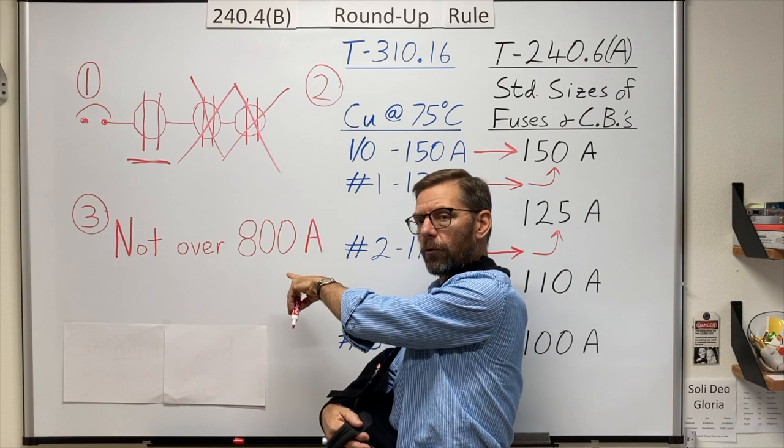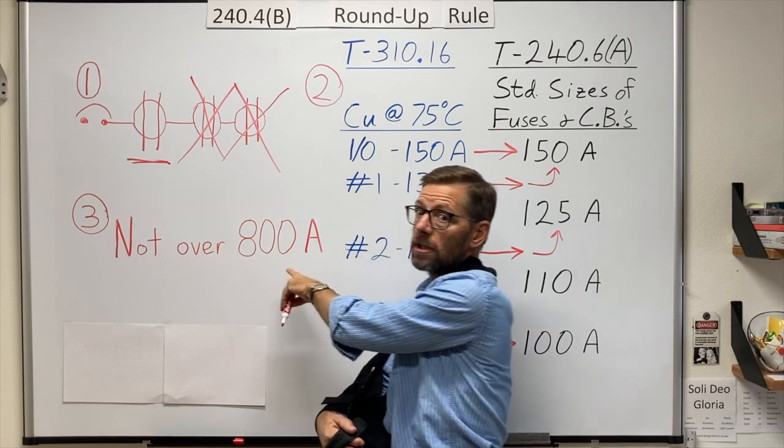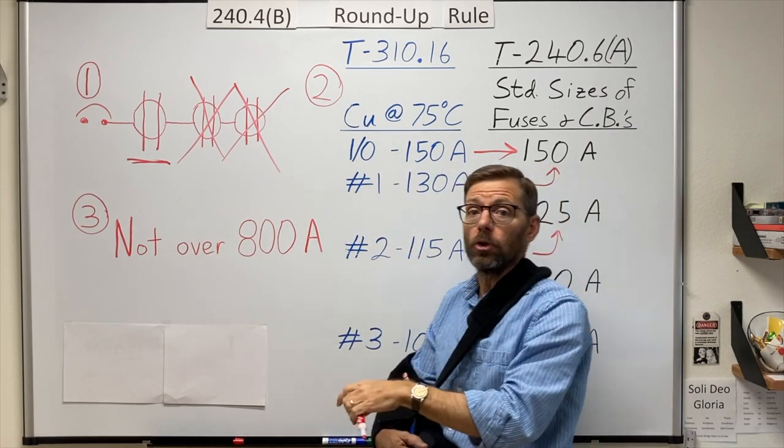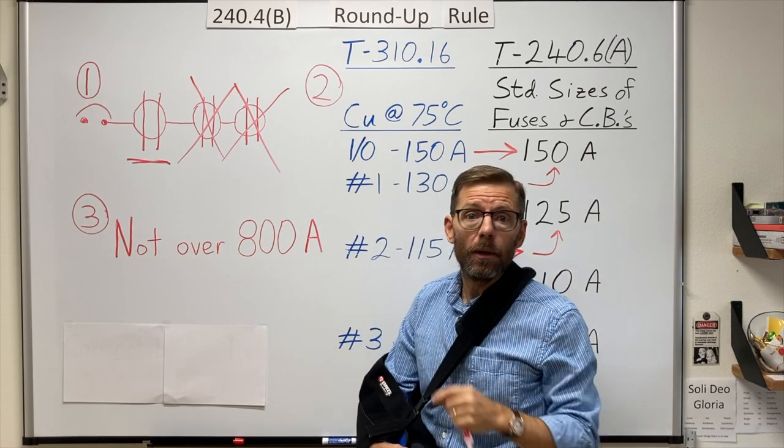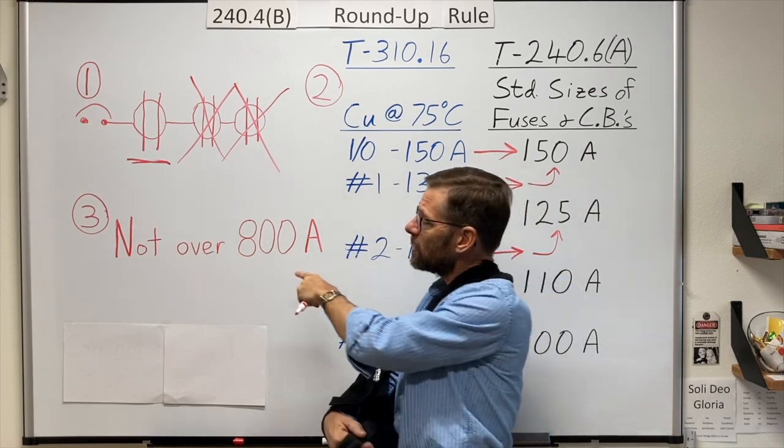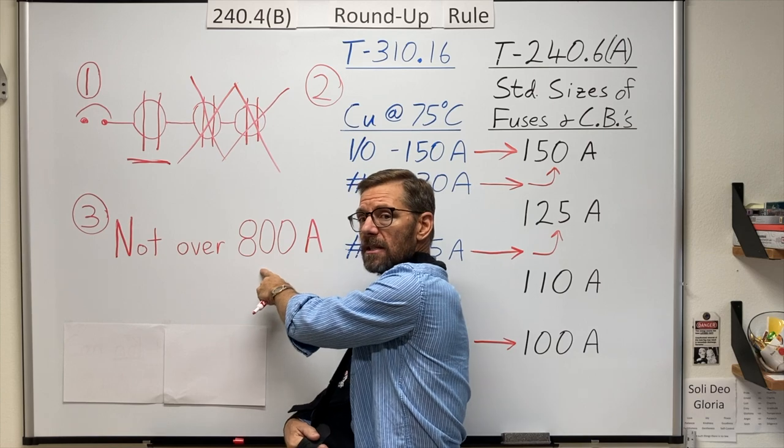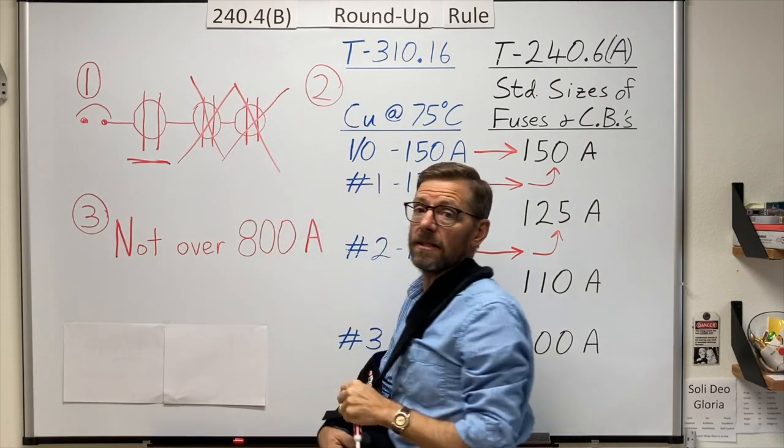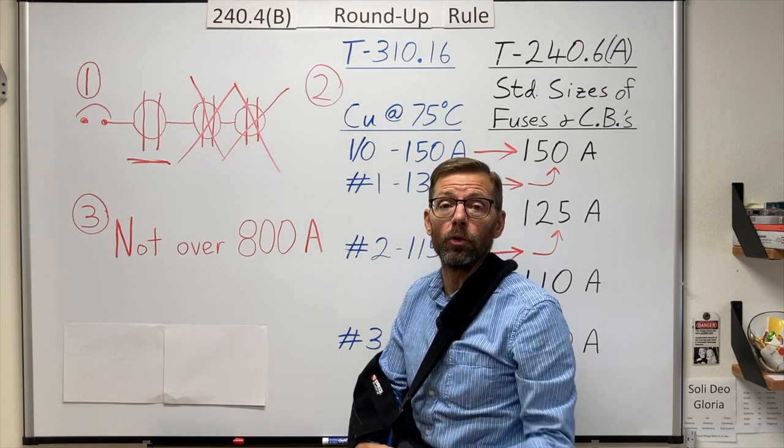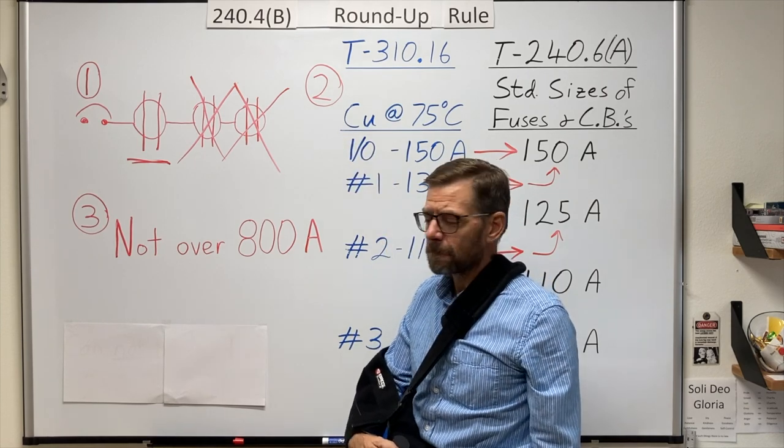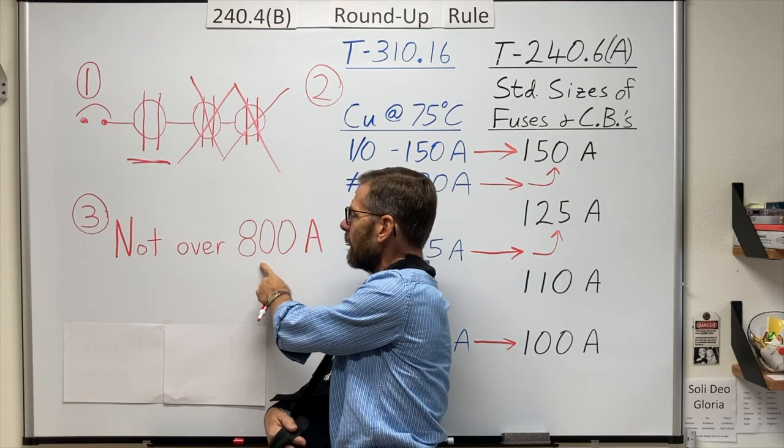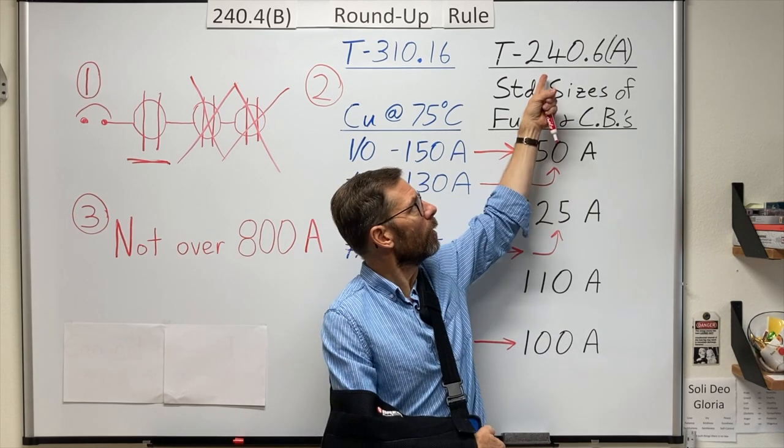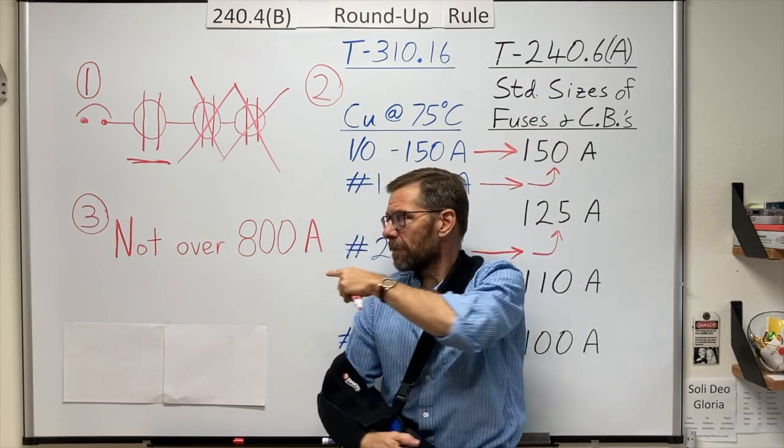Condition number three says I can use this provision up to and including 800 amps, but not above. Incidentally, that pretty much says the same thing as 240.4C says as you read down through the various subsections.